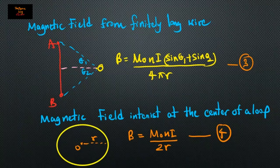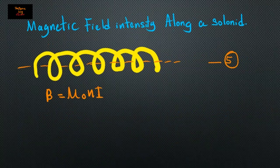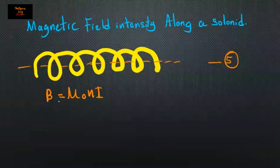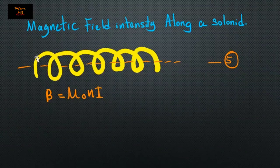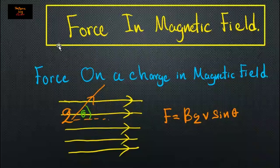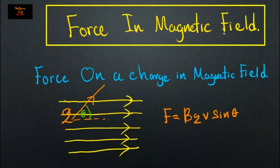Moving into the fifth equation: magnetic field intensity along a solenoid. The magnetic flux density B equals mu-naught n I, where n is the number of turns in the solenoid. Now moving into the second part — force in magnetic field.